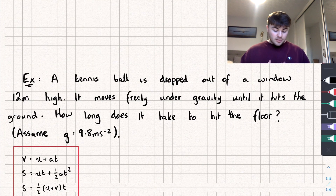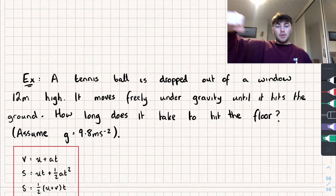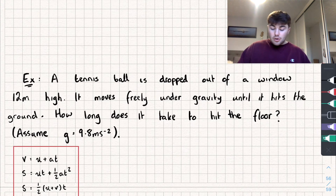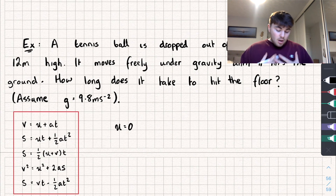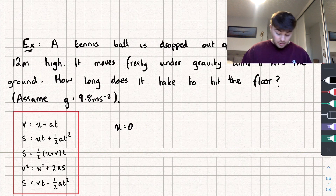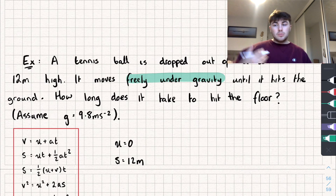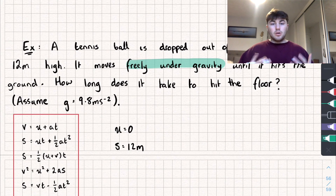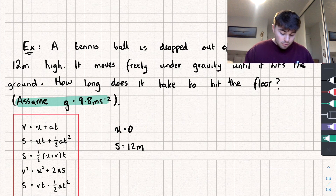The second question: a tennis ball is dropped from a window 12 meters high, moving freely under gravity until it reaches the ground — how long does it take to hit the floor? We assume someone is just holding it out and letting go, not throwing it down, so the initial velocity u = 0. The window is 12 meters high so the displacement s = 12 meters. When something moves freely under gravity, it speeds up as gravity pulls it down, and in maths we use gravity for the acceleration.